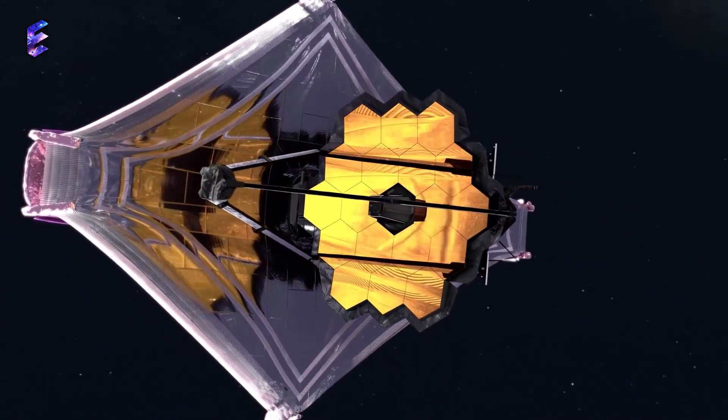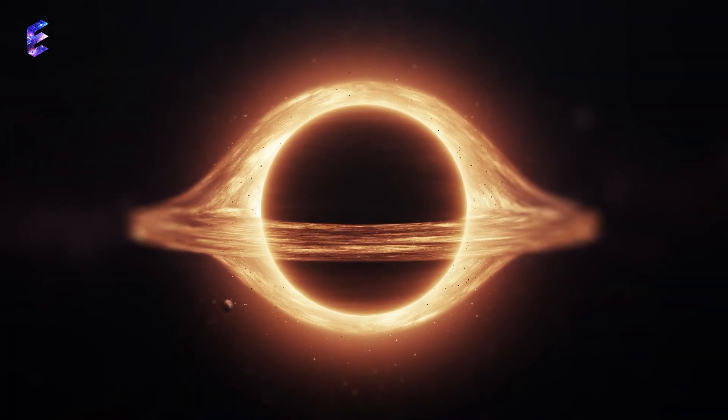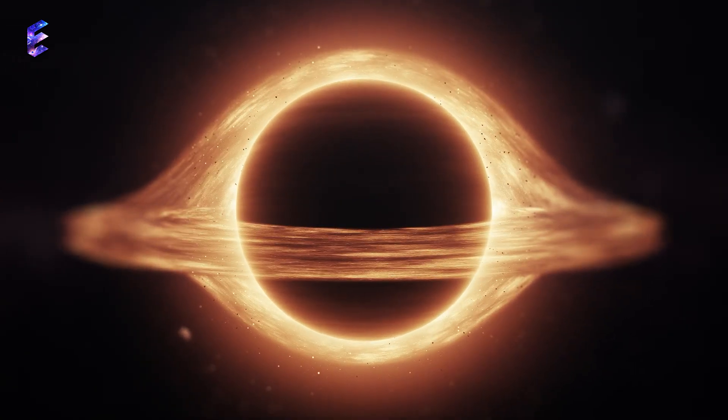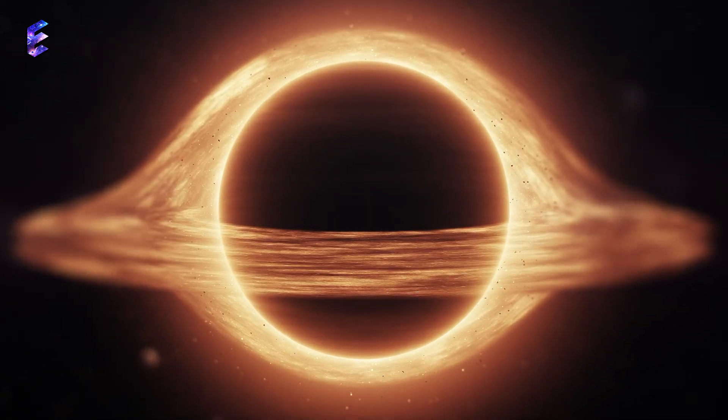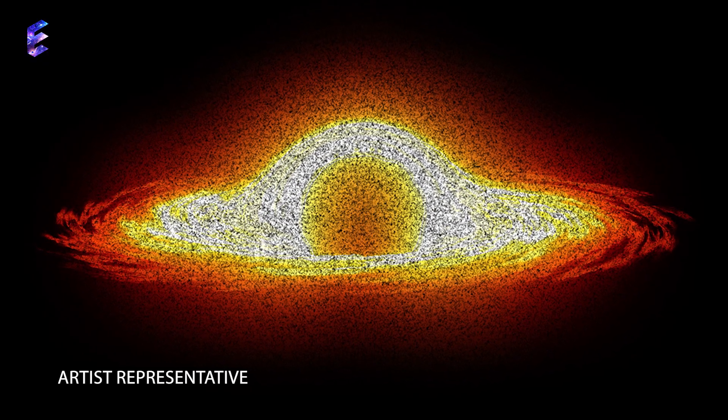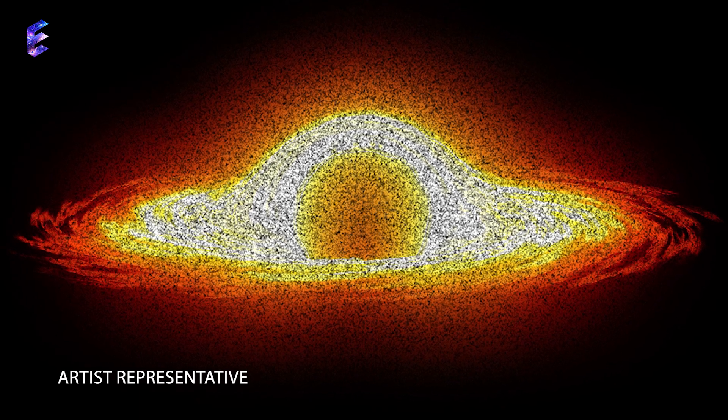Observations collected through the James Webb Space Telescope have revealed an active supermassive black hole 10 million times the mass of the sun, one that is actively growing as it slurps up matter from the space around it. At just 570 million years after the Big Bang, this is the earliest growing supermassive black hole detected yet, although scientists are hoping it won't remain the record holder for long.